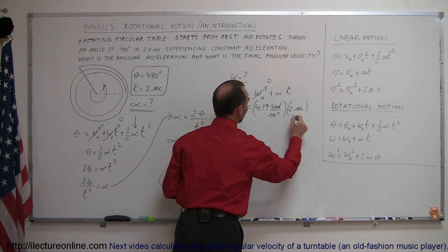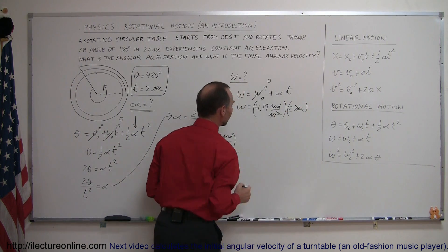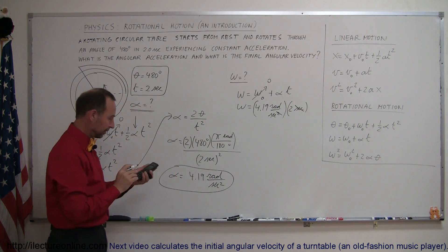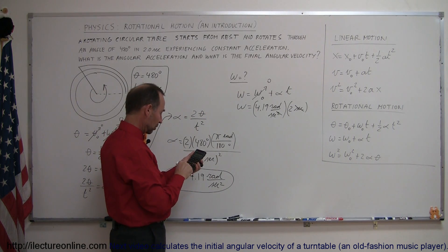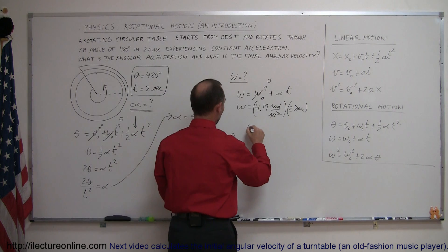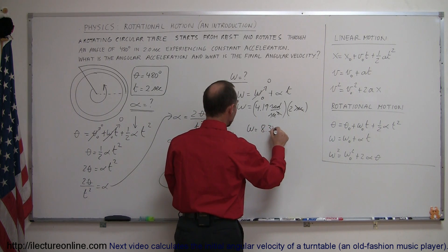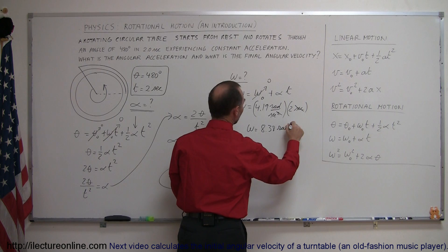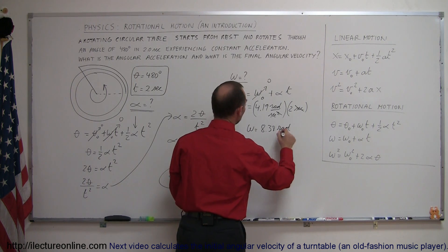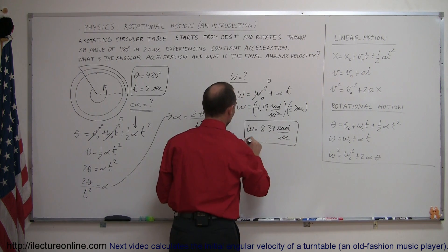The time was 2 seconds, so times 2 seconds. Notice that one of these seconds cancels with one of those seconds, we end up with radians per second. So times 2 equals omega equals 8.38 radians per second, which is the angular velocity.